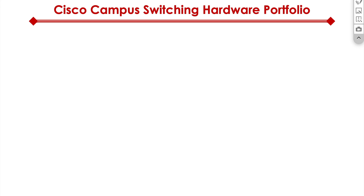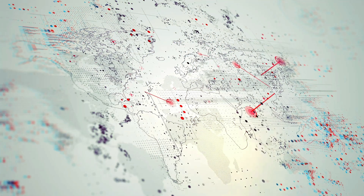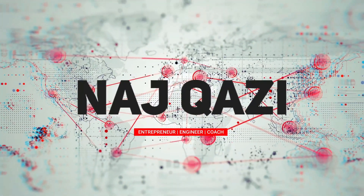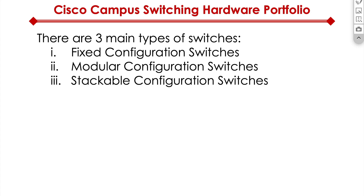I would like to give you a quick review of the Cisco campus switching hardware portfolio. But before I take you to Cisco's website, there are three main types of switches: fixed configuration switches, modular configuration switches, and stackable configuration switches. I'm going to go through each type on Cisco's website.